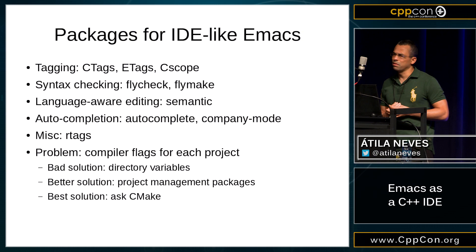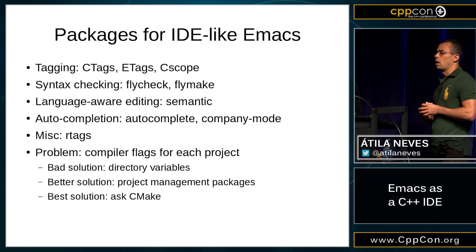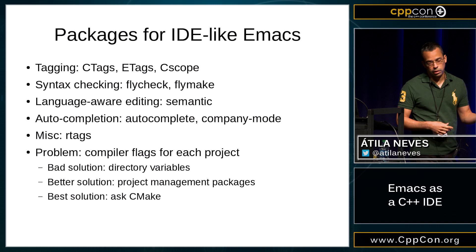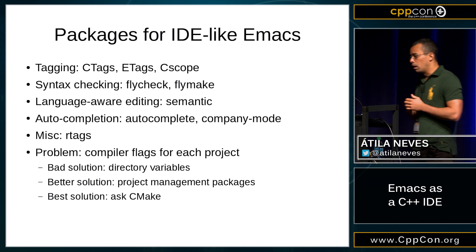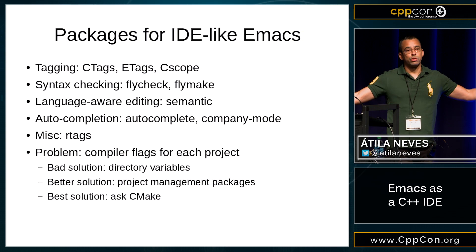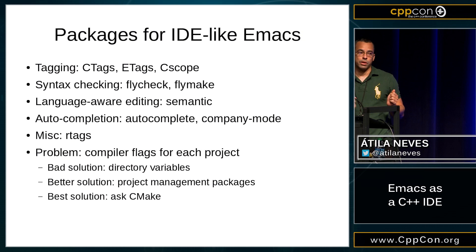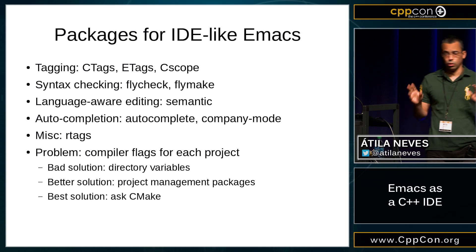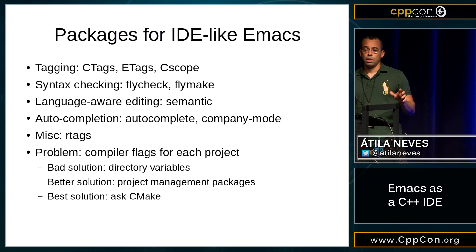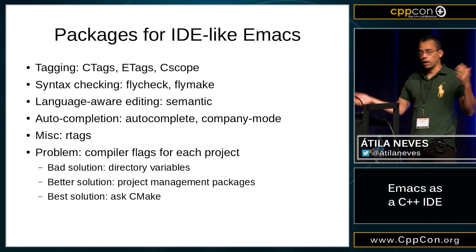Emacs ships, since version 23 I think, a package called Semantic. It's not on by default — you have to turn it on — and it's supposed to understand the language you're working on so you can jump to definition, autocomplete, that kind of thing. But there's a problem with that, which I'll come to shortly. For autocompletion you have two main packages: auto-complete and company-mode (complete any). Both have backends so you can have different sources of information. Both have engines for Clang, which is good, but it doesn't always work. And there's RTags — RTags is awesome; I didn't write it, somebody else did. I'm using it for C and C++ because it works so well. It leverages libclang with a server and client: the server caches results of compilation with libclang, and then it can give you information about where things are defined.